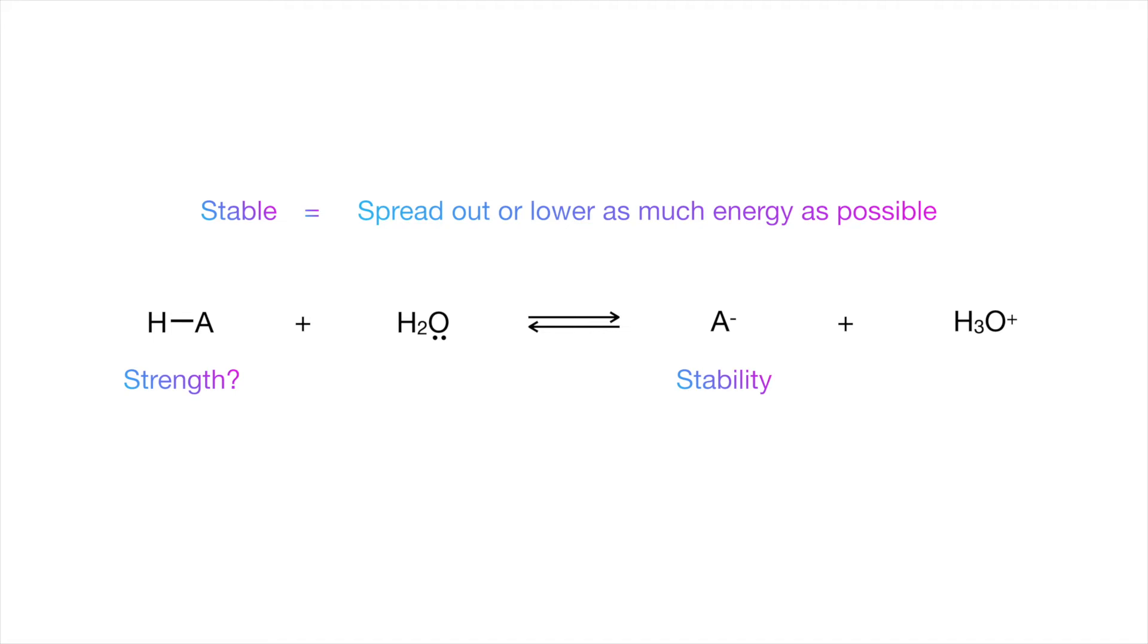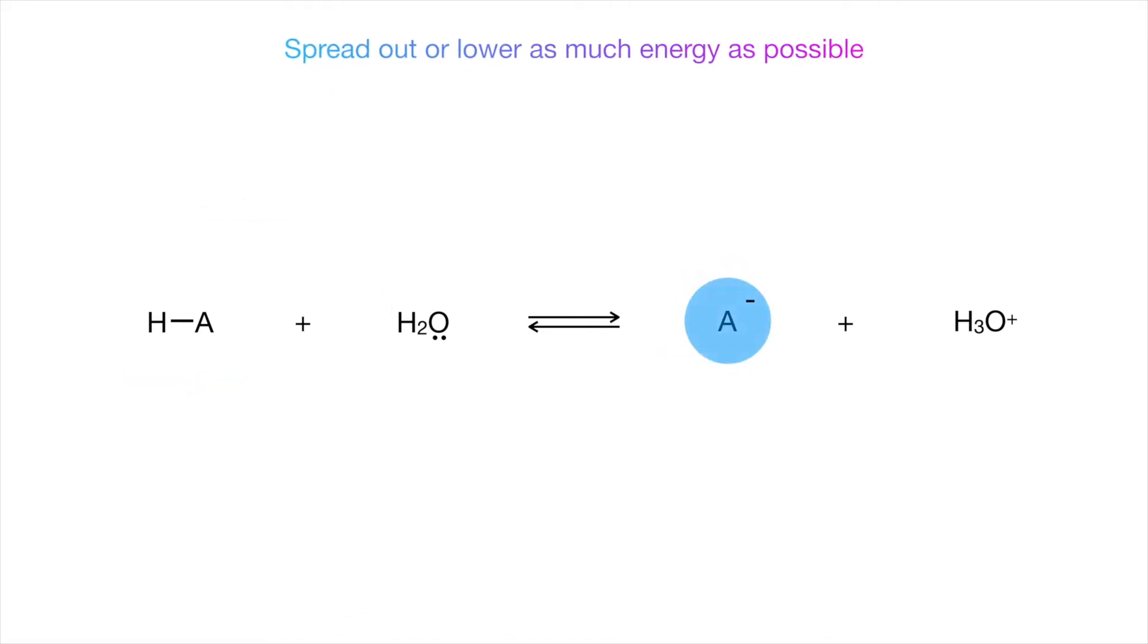So instead, of trying to haphazardly figure out how strong the bond between hydrogen and the acid is, we can do the alternative and look at how stable the conjugate base is. So let's make use of what I've just said. Things like to spread out as much as possible, and the thing in our case is an electron with a charged conjugate base. If the molecule can spread out its charges or lower its energy or accommodate as many electrons as possible, then it's quite stable, making it a worse base and a better acid.